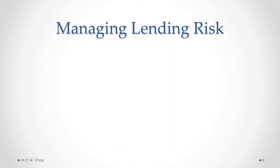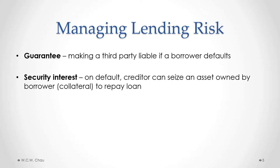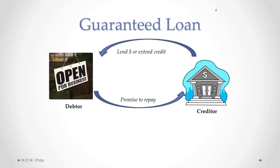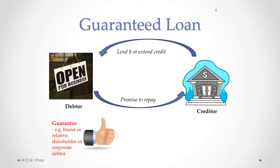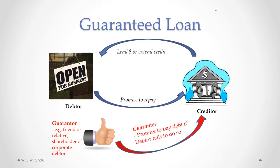To manage the risks of making an unsecured loan, a lender may require one or both of two things: a guarantee and/or a security interest. A guarantee essentially makes a third party liable if the borrower defaults on the loan. A security interest gives a creditor the right on default to seize an asset owned by the borrower to repay the loan. A guaranteed loan is just like an unsecured loan, except now we have a third party called a guarantor. A guarantor can be anyone — a friend, a relative, or quite often a shareholder of a corporate debtor. The guarantor enters into an agreement with the creditor promising to pay the debt if the debtor fails to do so.